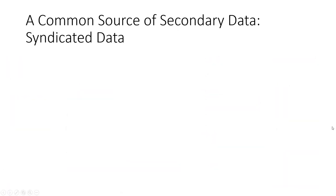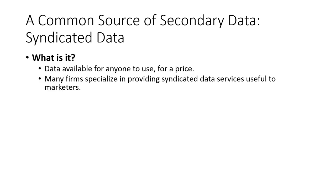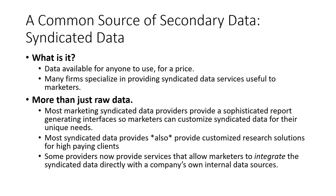While there are a variety of secondary data sources for marketing research, we need to note that syndicated data is very common. Syndicated data is data available for anyone to use — even your competitors — for a price. For-profit marketing research firms collect this data and sell it to other marketers. In modern marketing practice, syndicated data is usually more than just raw data. Most syndicated data providers include sophisticated report interfaces so marketers can customize analysis for their unique needs, and many also provide customized research projects for individualized clients, which is typically much more expensive.